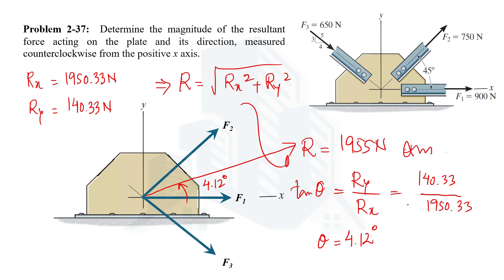This is how the resultant force is calculated when different forces act on a body with their magnitudes and directions given — we can find both the magnitude and direction using this method. That's all from this video. Thank you for watching.